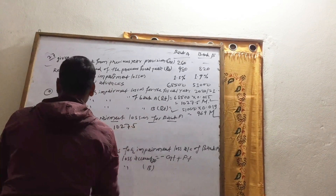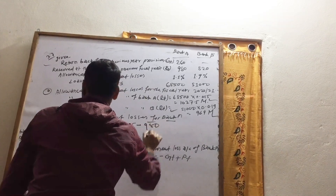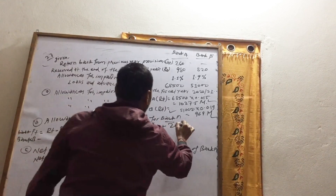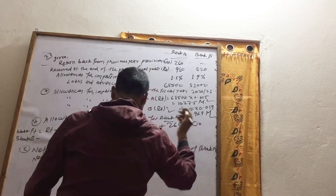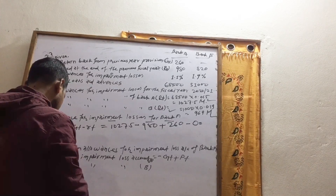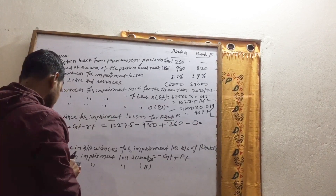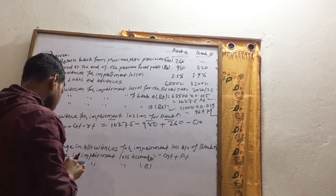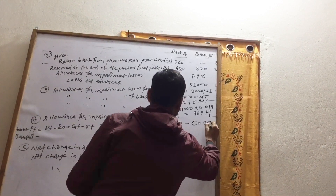Bank A: RT equals 1027.5. So, 1027.5 minus RO (which is 980) plus GT (which is 260), minus RT equals 307.5. So, 307.5 minus 0 equals 307.5.